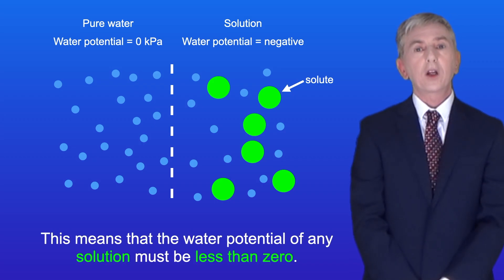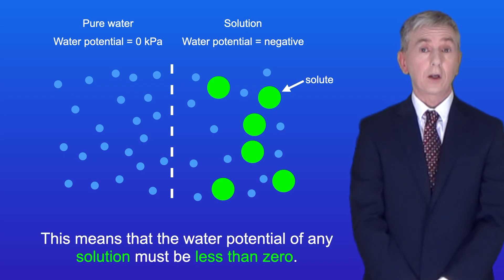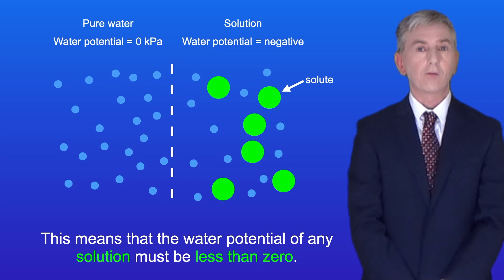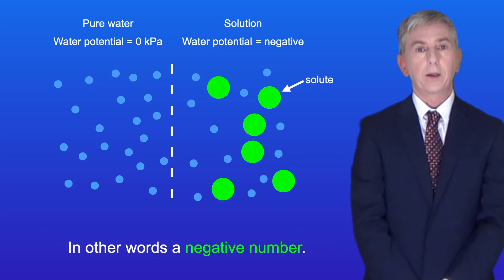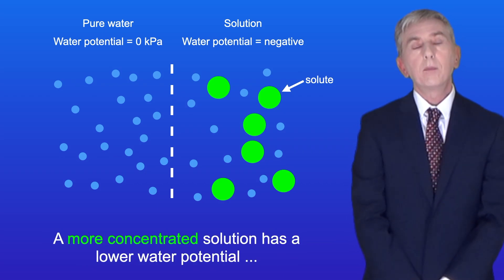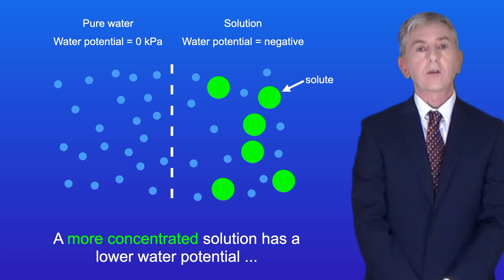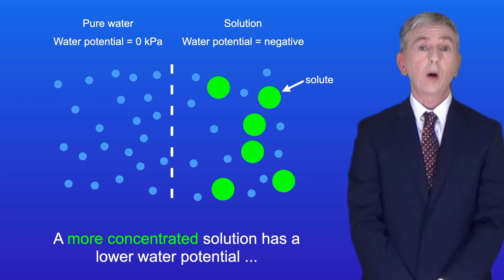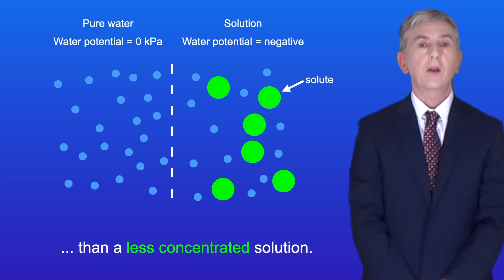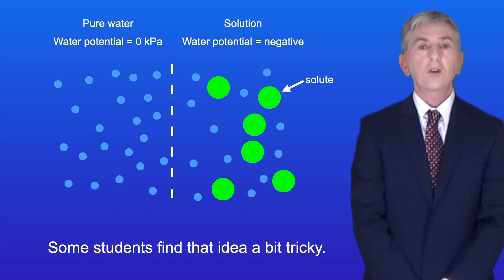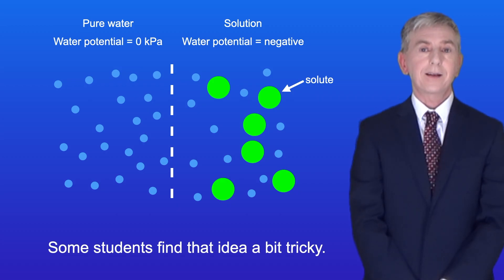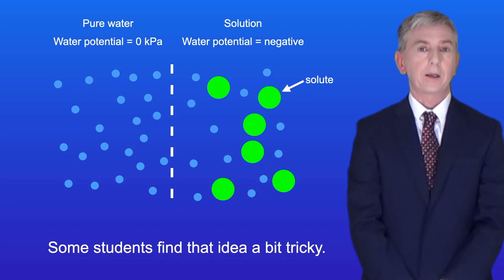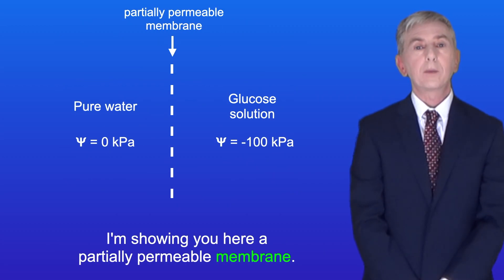So this means that the water potential of any solution must be less than zero, in other words a negative number, and a more concentrated solution has a lower water potential than a less concentrated solution. Now some students find that idea a bit tricky. I'm showing you here a partially permeable membrane.